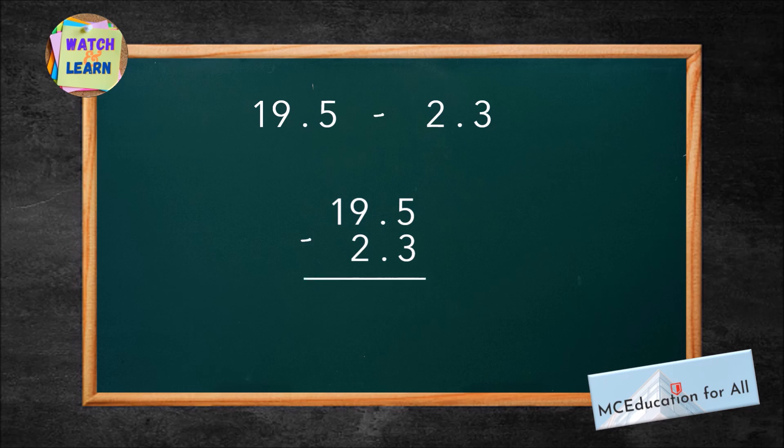Subtract the numbers as you would with whole numbers. 5 minus 3 is 2. 9 minus 2 is 7. And bring down 1. After, place the decimal point directly below the decimal point in the addends. Therefore, the difference of 19.5 and 2.3 is 17.2.